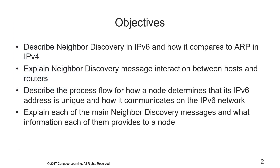Hello everyone. This week we will be talking about neighbor discovery in IPv6. ICMPv6 has a similar operation to ICMPv4, and we talked about that last week. Neighbor discovery is a process within ICMPv6 used to initiate and maintain node-to-node communications on a network. Neighbor discovery has five functional processes that nodes execute in order to communicate with neighbor nodes on the network, whether on-link or off-link.